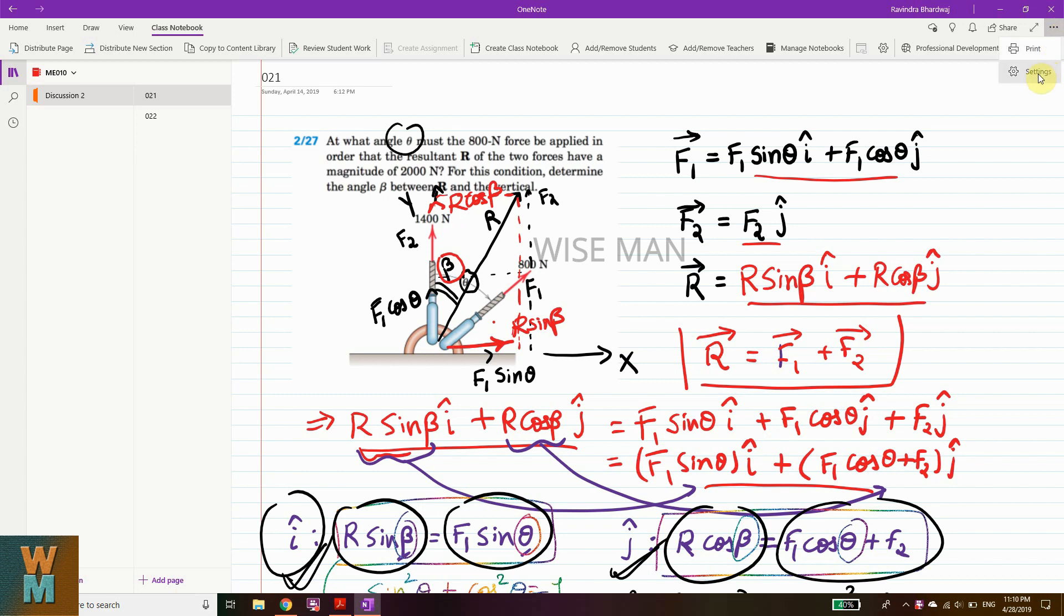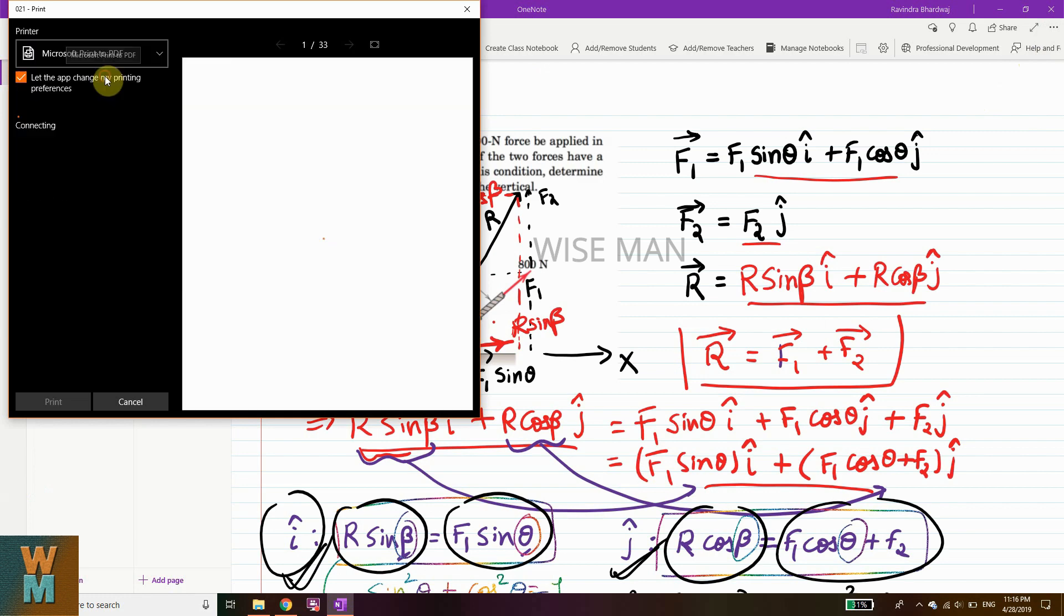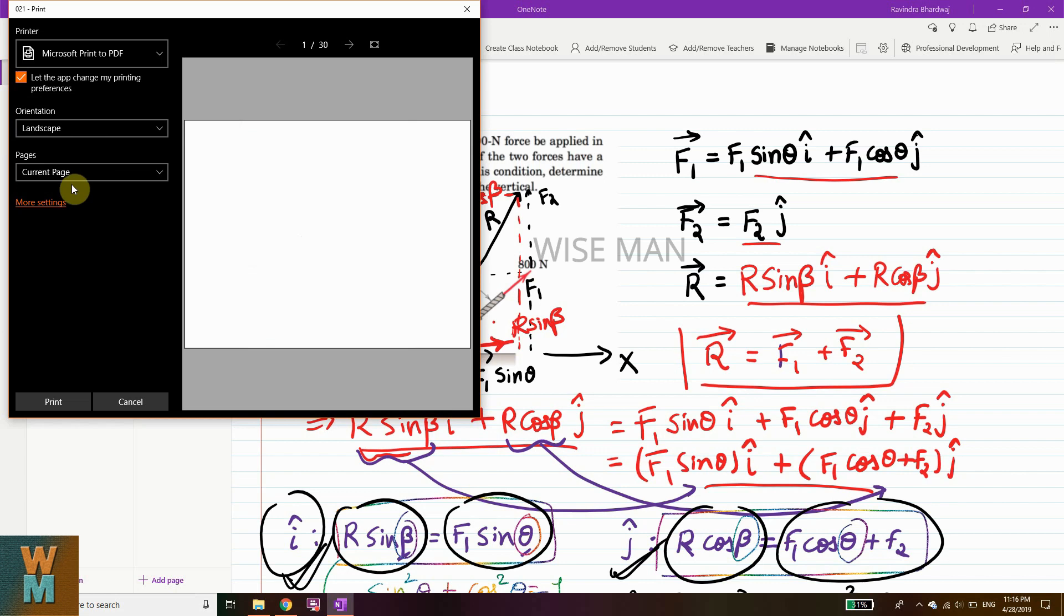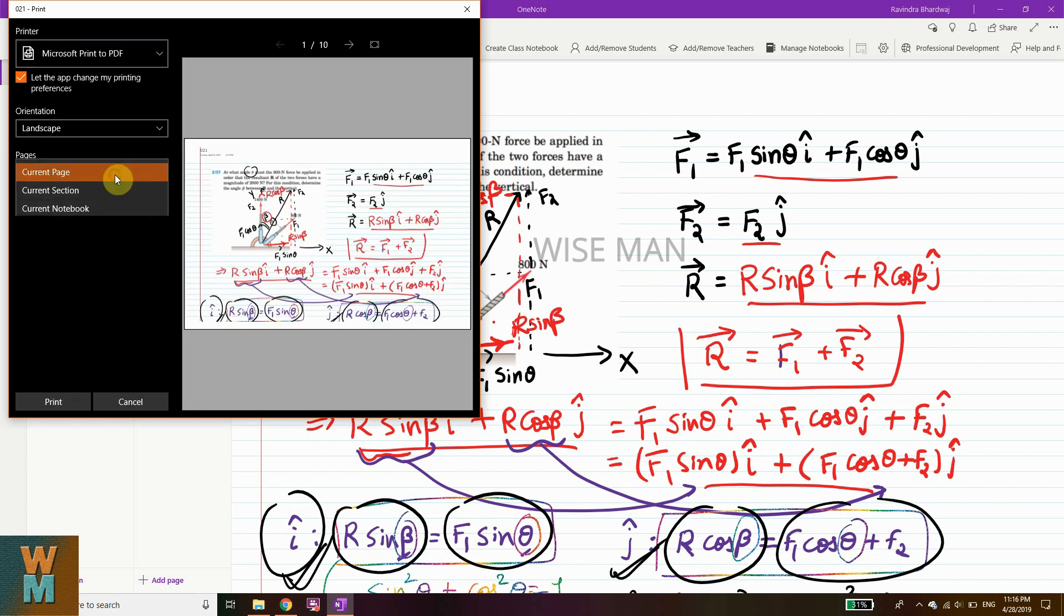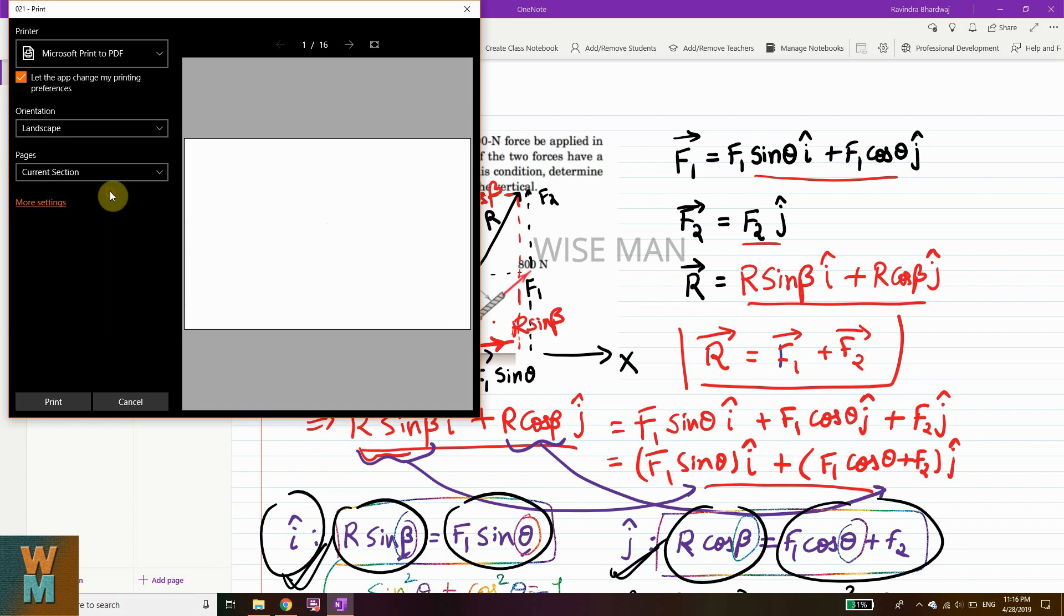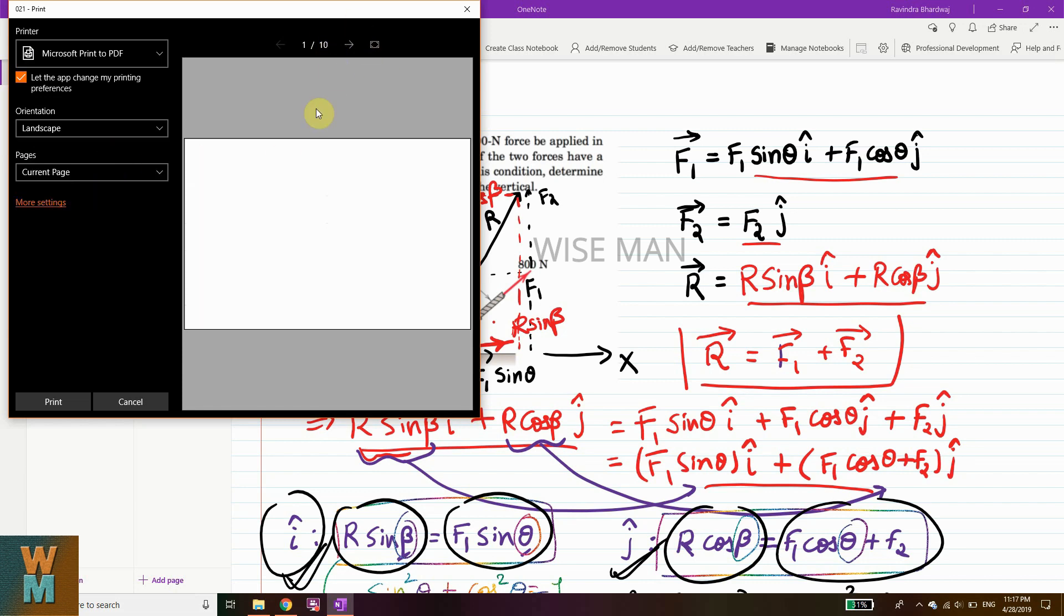So it is a settings option here. If you click on this you can go to print. What you need to do, go to here, go to print. And now let's see, Microsoft print to PDF, landscape, tabloid, and current section. It's a current page.